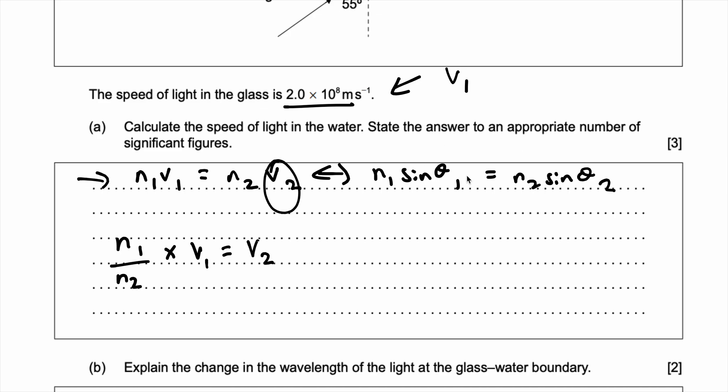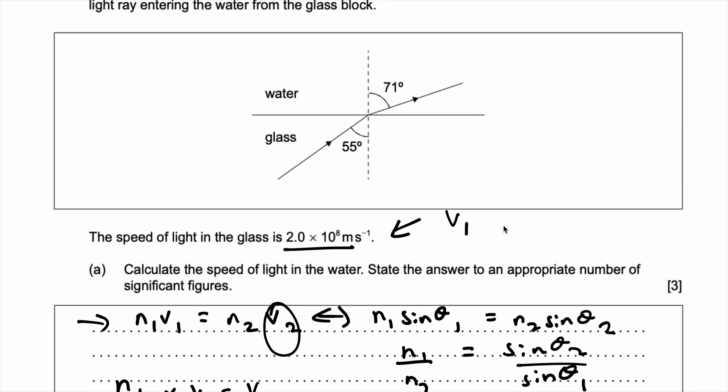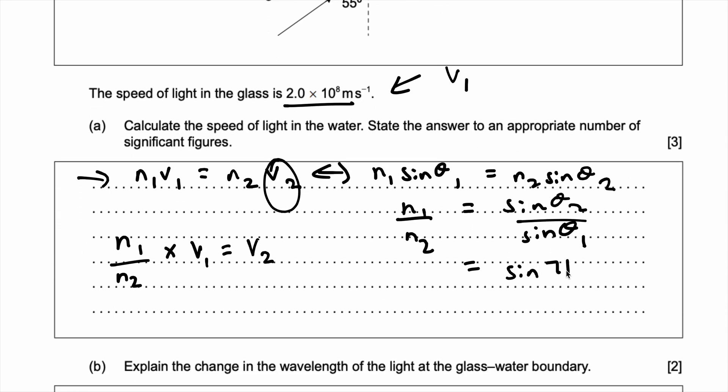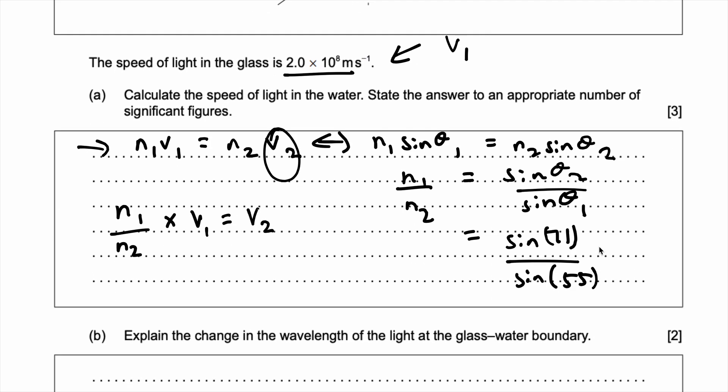Now this is where the second equation comes in. Do you not see that we can rearrange this to get n1, n2. n1, n2 is nothing but sin theta 2 over sin theta 1. And now we know both these values because that's given in this diagram right here. So this ratio is basically equal to sin of 71 degrees over sin of 55 degrees. And that's what this ratio is equal to. And now if I put this on my calculator, what do I get? You get 1.15 and now that's the ratio of n1 over n2.